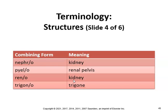Renal calculus is a kidney stone. Renal dialysis is the complete separation of waste materials — uric acid and creatinine — from the blood using a kidney machine or fluid in the peritoneum. Trigonitis is inflammation of the trigone, which is an area in the bladder.